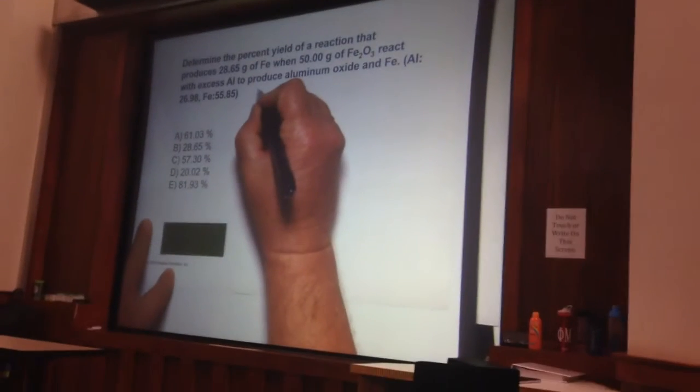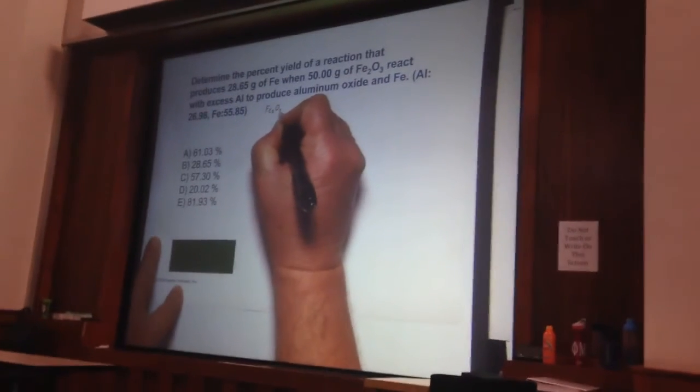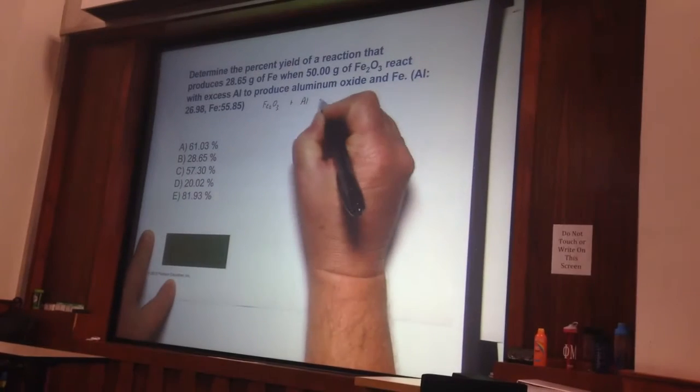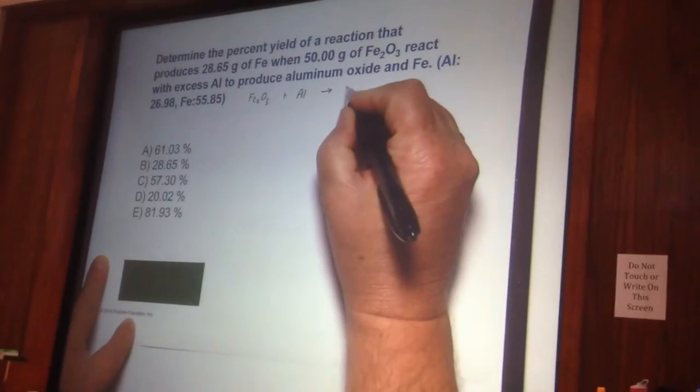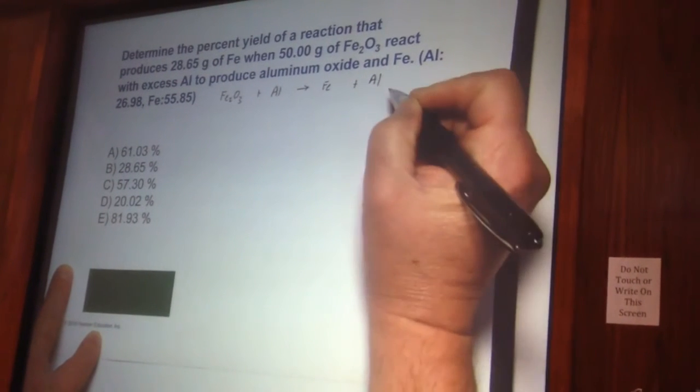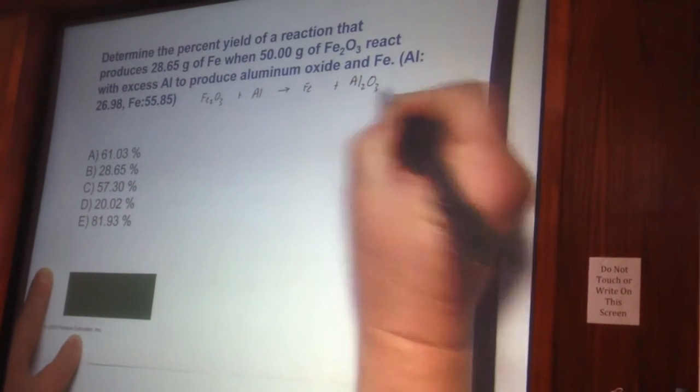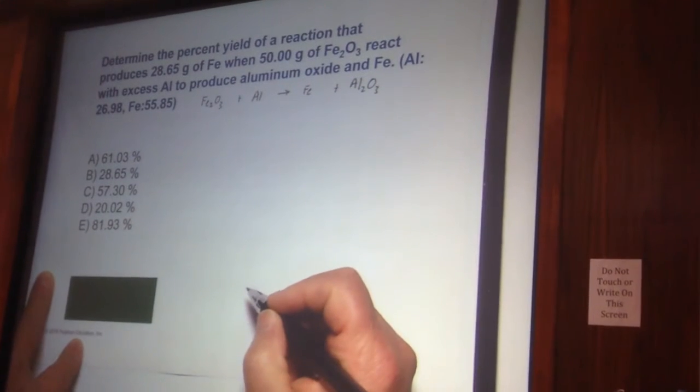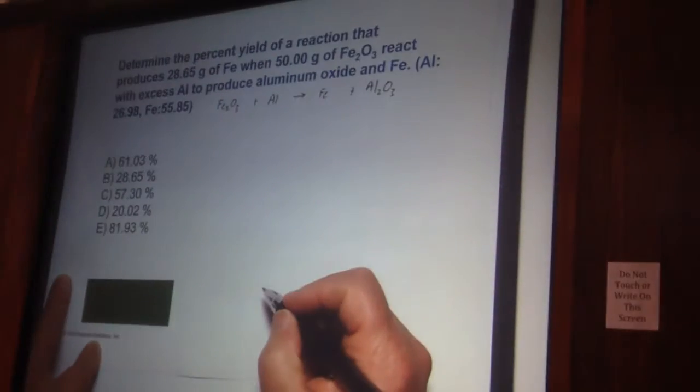We're going to take iron oxide plus aluminum to go to iron plus aluminum oxide. Aluminum oxide will be Al2O3. Aluminum is going to be plus 3, oxygen is going to be minus 2.